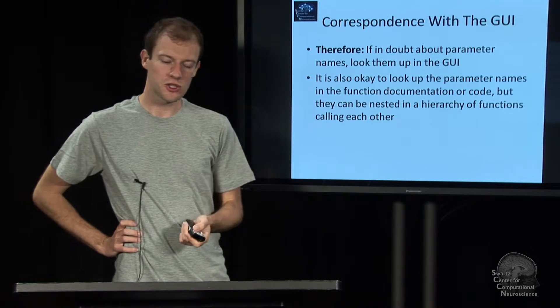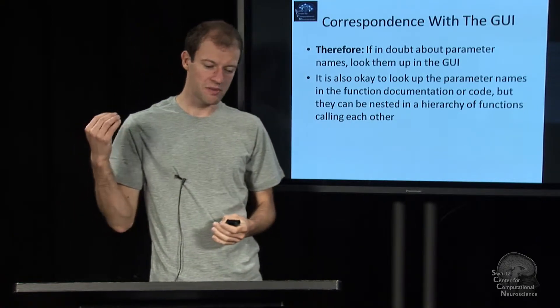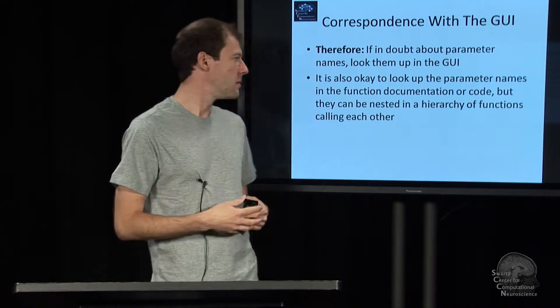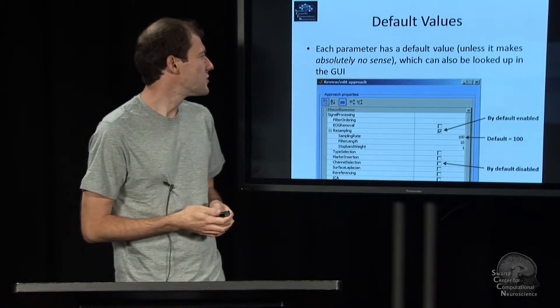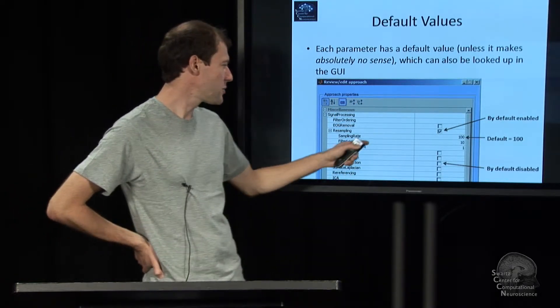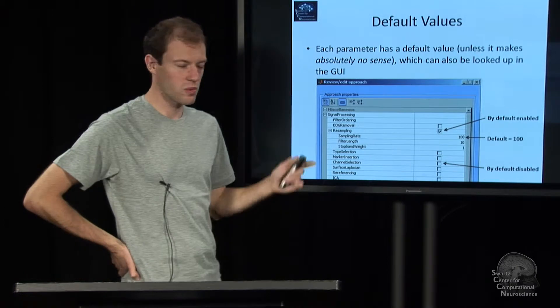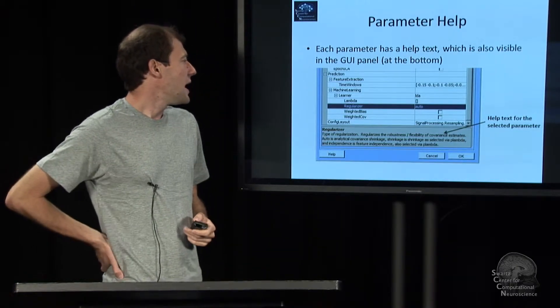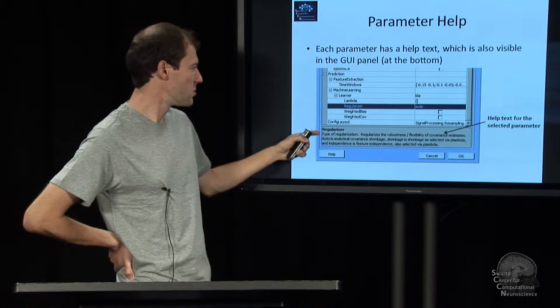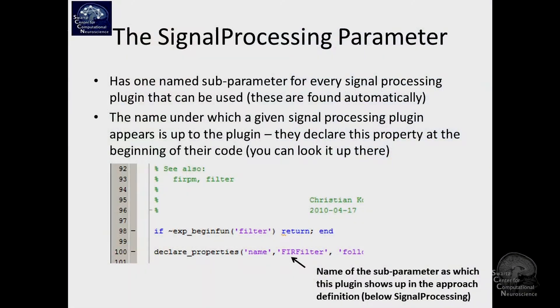Also of course they are documented in the functions, but because functions call other functions and sometimes expose the other functions' parameters, it might mean that you have to chase through several layers of functions until you find the actual name. Unless you really know where to look, it's probably easiest to just go into the GUI. Furthermore, everything has a default value. For example, this paradigm here happens to have resampling enabled by default, and it by default resamples at 200 Hertz. These parameters can be on/off, and there's help for everyone. Fundamentally down here you always see the help text for any parameter.